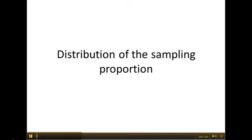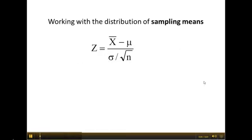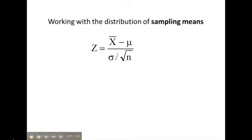Now let's look at the distribution of the sampling proportion. If you recall, in the last videos we looked at the distribution of the sampling means, which is very similar to the normal distribution, but we allowed for sampling error. It was really the only difference.